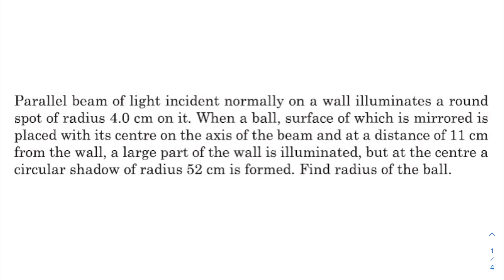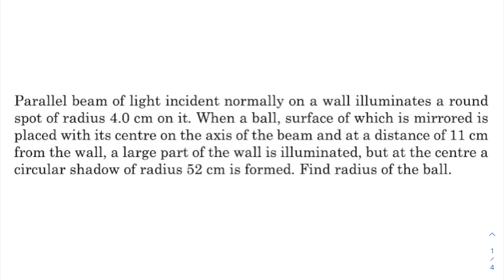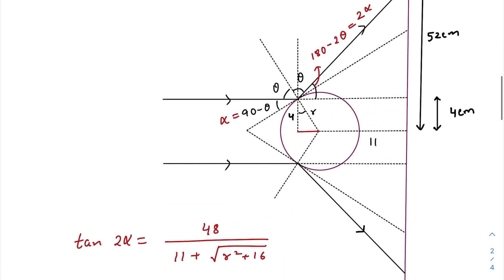In today's question, we have a parallel beam of light incident normally on a wall, which illuminates a round spot of radius 4 centimeters. When a ball whose surface is mirrored is placed with its center on the axis of the beam at a distance of 11 centimeters from the wall, a large part of the wall is illuminated, but at the center there is a circular shadow of radius 52 centimeters. Find the radius of the ball.